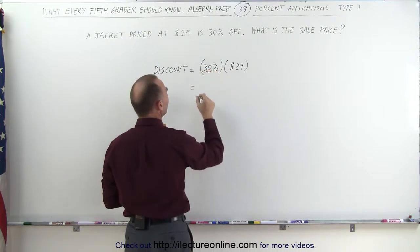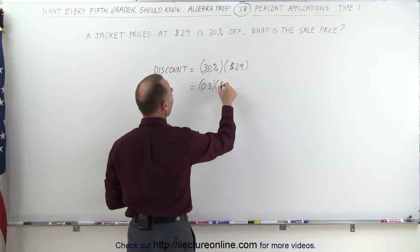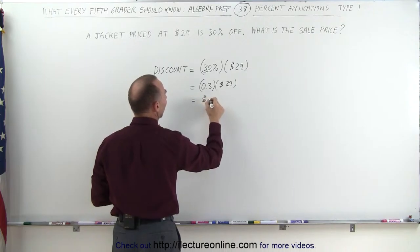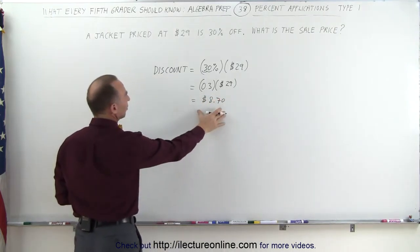When we move the decimal place over two spots we get 0.3 multiplied times $29 and that would be equal to $8.70. So that's our discount price.